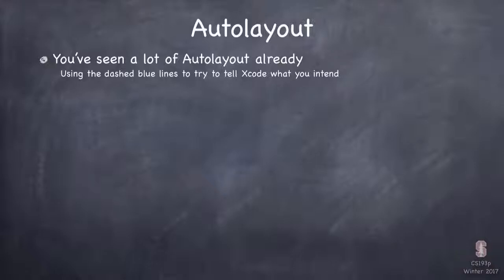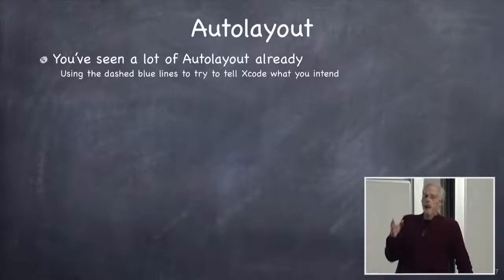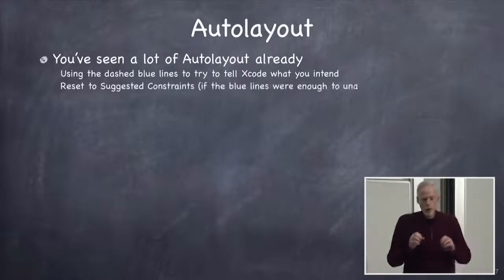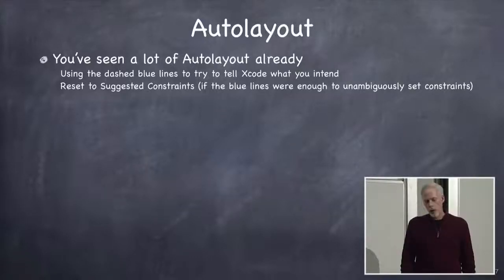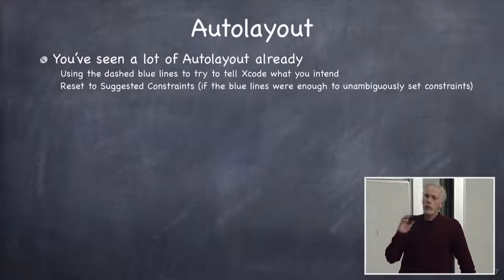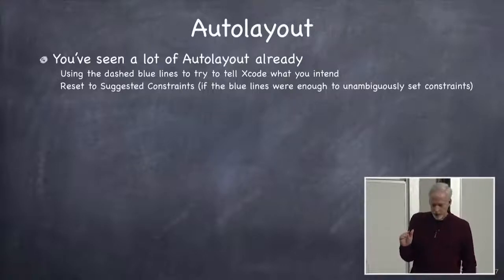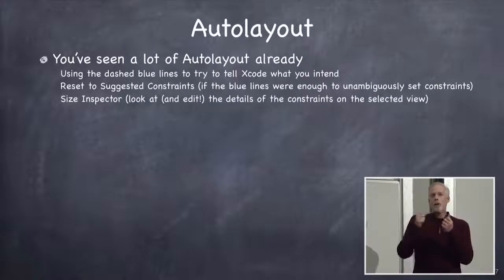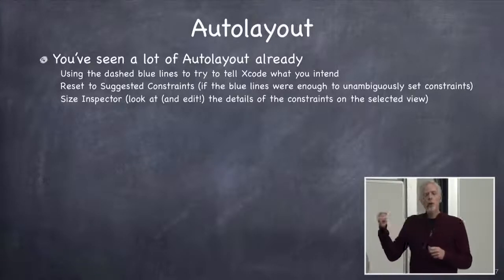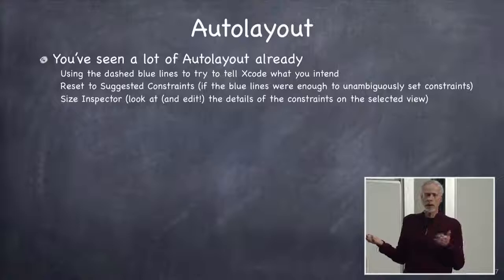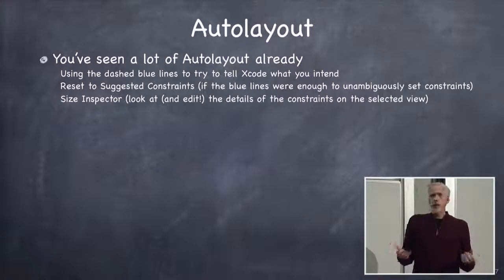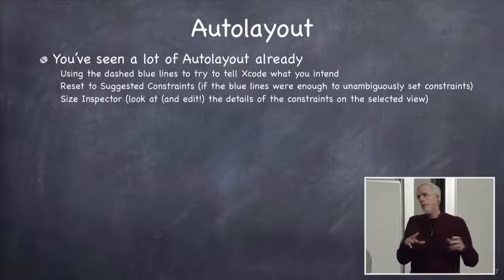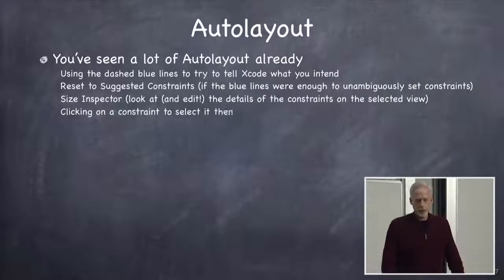So what have you seen in Auto Layout already? You know about the dashed blue lines — when you drag things out and move them around, making those dashed blue lines appear, it helps Xcode when you want to do reset to suggested constraints. Sometimes reset to suggested constraints doesn't really do what you want; it only works if those blue lines unambiguously indicate what you wanted. After you do something, especially after reset to suggested constraints, you can go to the size inspector and click on any of the views in your UI to look at the constraints. It shows them, and you can hover over them with the mouse, and it will highlight them on the screen.